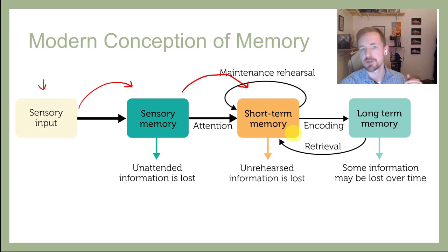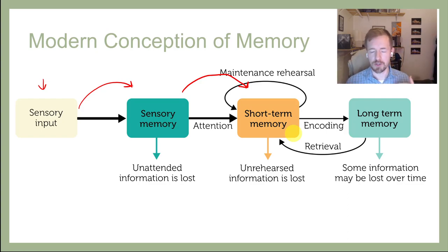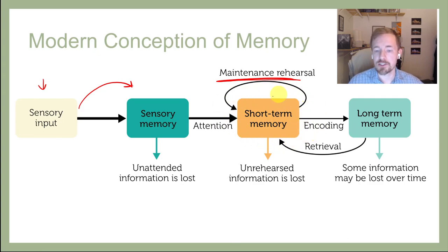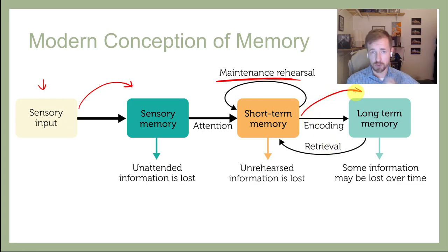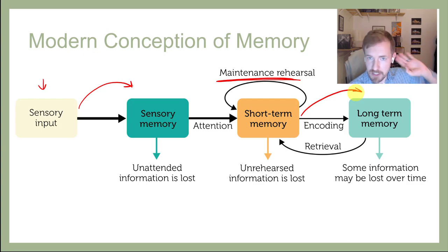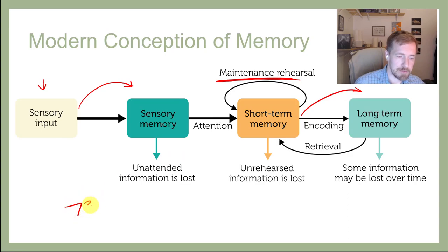In short-term memory we can briefly hold on to things. If I tell you to remember the phone number 739-1278, you'll probably rehearse it to yourself — '739-1278, 739-1278' — and by doing that you are maintaining that stimulus in short-term memory. That's called maintenance rehearsal. Now, if you do a good job of paying attention and making it meaningful to you, you have a chance of moving that information from short-term memory to long-term memory. You could also write it down to help.